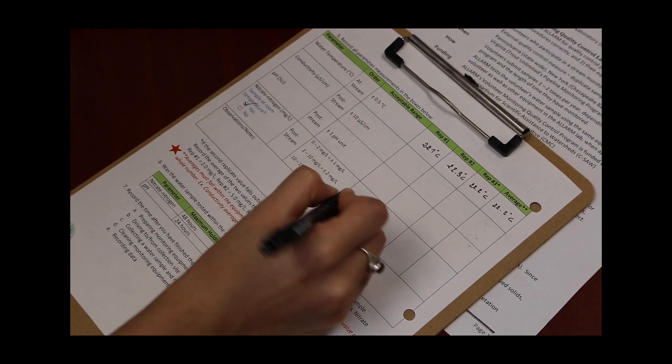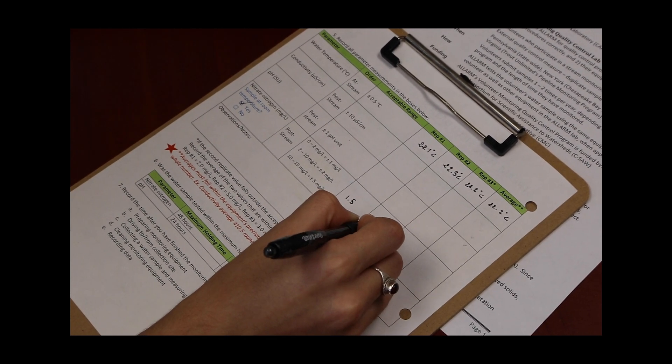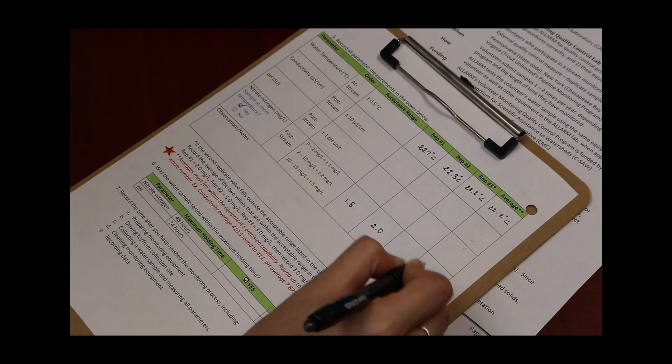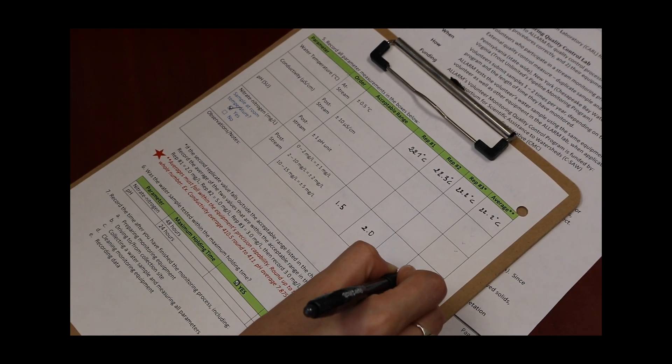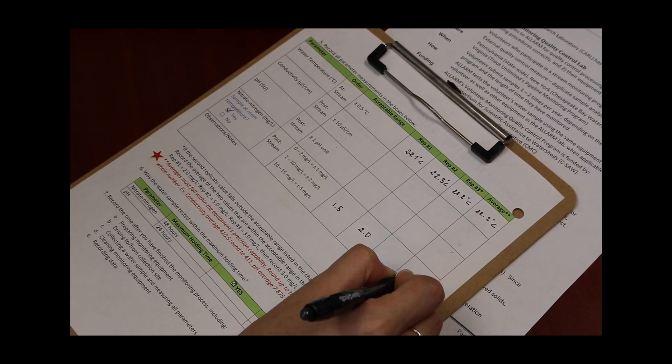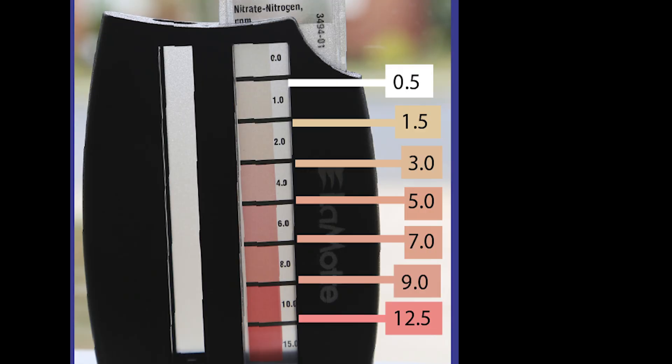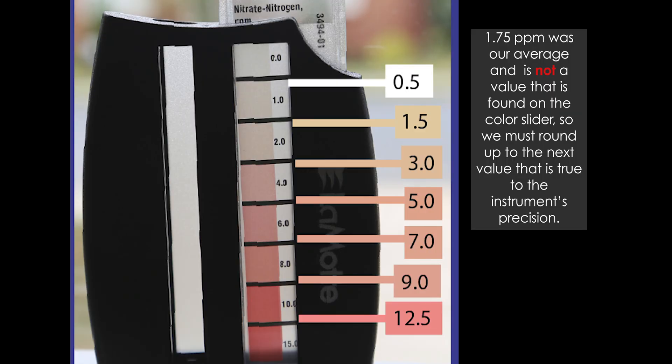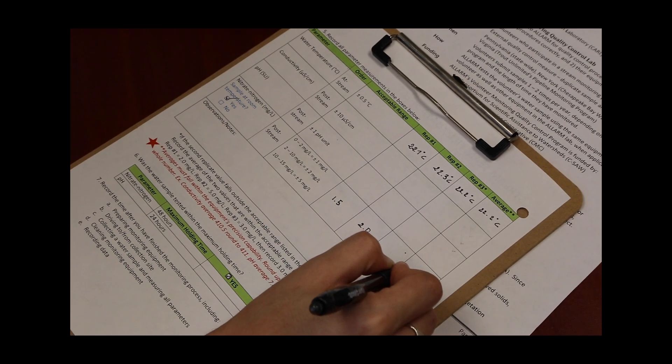Match the color in the test tube to the color most similar on the OctiSlide bar and record the result on your datasheet as milligrams per liter nitrate-nitrogen. If the color is between two values, you can record the midpoint between the two values.